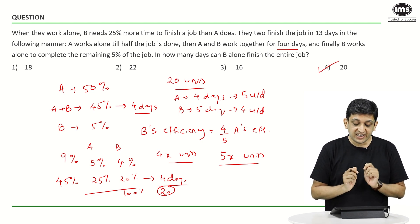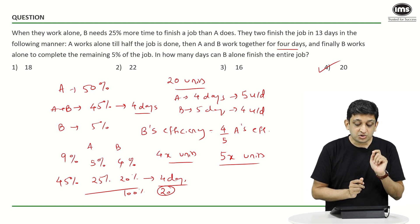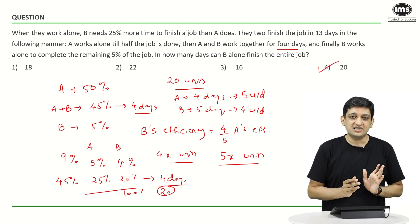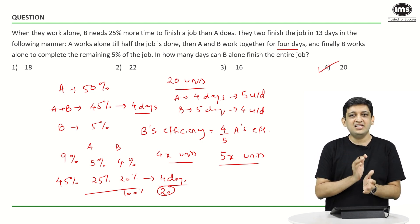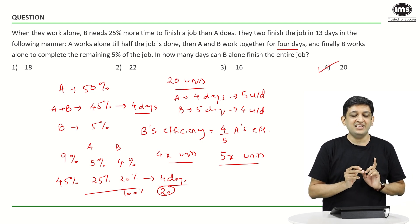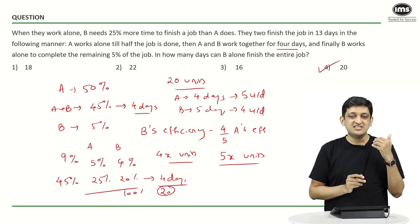So what did we do? Again, to recap, we just tried to figure out the efficiency of A and B. Also, the values are given in such a nice manner that you will get that 45 percent, and if you are able to tie it up with 25 percent of A and 20 percent by B in 4 days, your answer is going to be extremely easy to get.